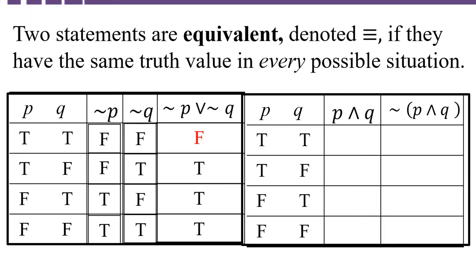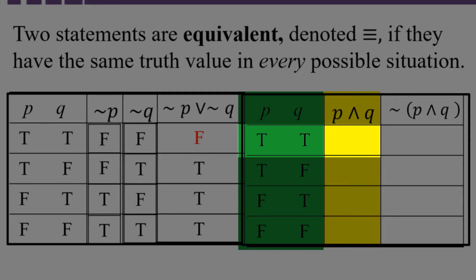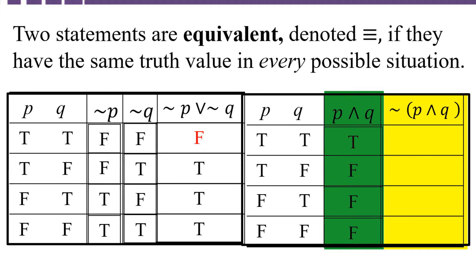Now let's complete the truth table on the right. First, complete the and part of the statement because of the parentheses. So our first column analyzes P and Q. The rule for the conjunction and is that it's only true when both components are true, and the only place that happens is in the first row. So that's true and the rest are false. Now we're going to use column 3 to get column 4 — we have to negate the values in column 3, which means just the opposite. So since column 3 had true, false, false, false, column 4 has false, true, true, true.